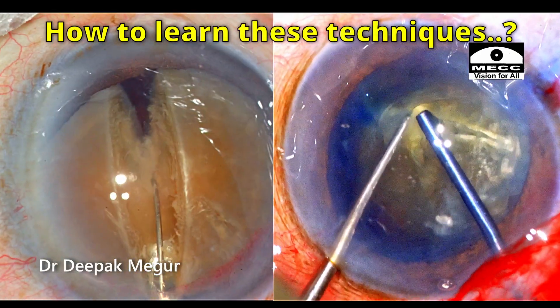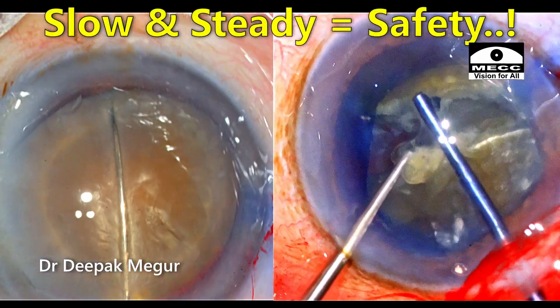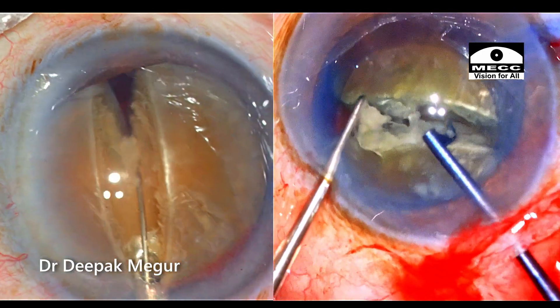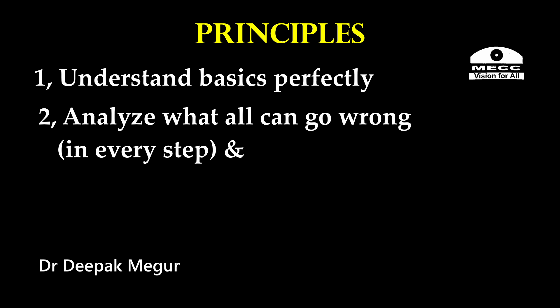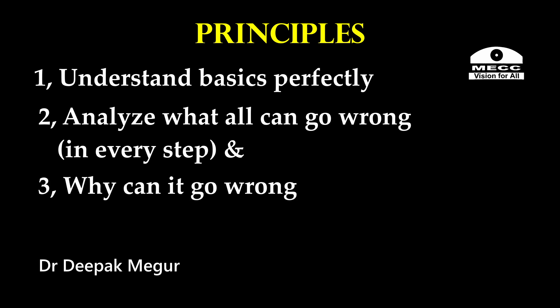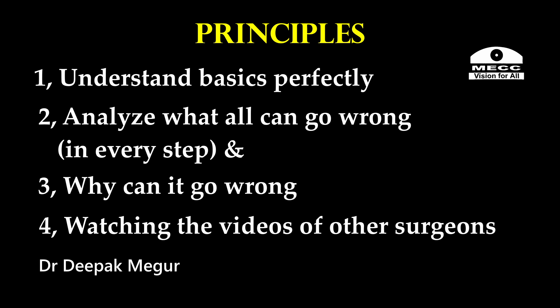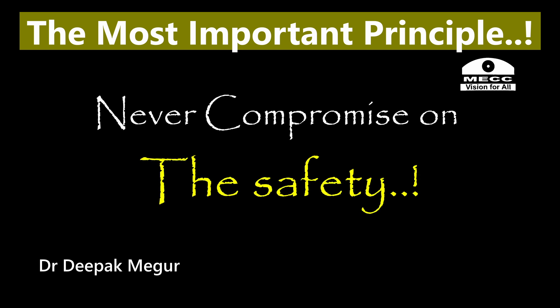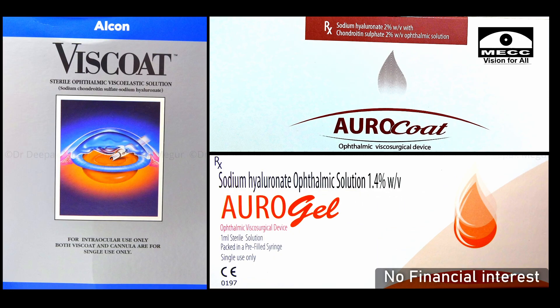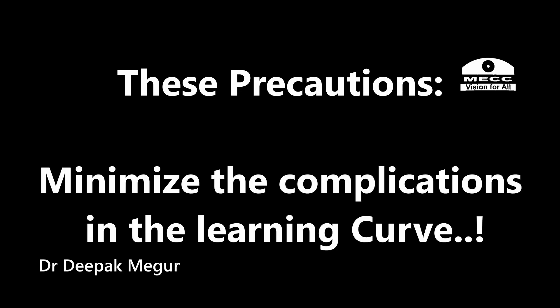So how should one learn these techniques? Slow and steady wins the race. Before venturing, one needs to follow these principles very meticulously. Number one: understand the basics perfectly. Analyze what can go wrong at every step and why it can go wrong. Watching videos by other surgeons repeatedly or reading many times does help. However, the most important principle is that one should never learn these newer techniques by compromising on the safety of the eye. That should be the most fundamental principle — never compromise on the safety of the eye. Using the best OVDs and instruments that one can afford will definitely help in minimizing complications during the learning curve significantly.